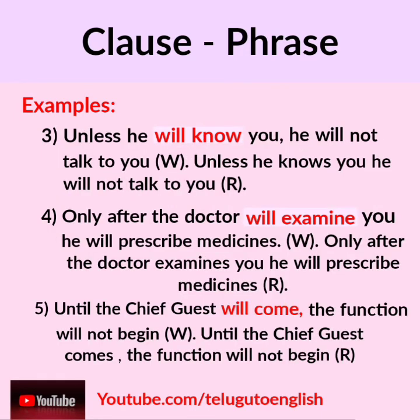Example 3 — wrong sentence: 'Unless he will know you, he will not talk to you.' This is a wrong sentence. Correct sentence: 'Unless he knows you, he will not talk to you.'